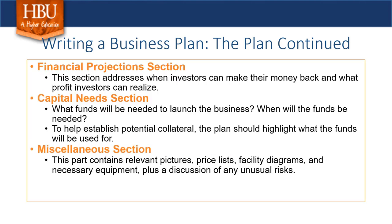The last three sections of the business plan are financial projections, capital, and miscellaneous. Financial projections show investors where they can make their money back and what potential profit they could realize — critical when seeking outside backing. The capital section discusses what money or resources it will take to get the company off the ground and when those funds will be needed. The miscellaneous section provides investors with a fuller picture through relevant pictures of the product or a discussion of how the product will be produced.